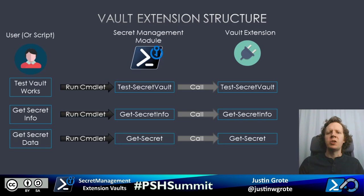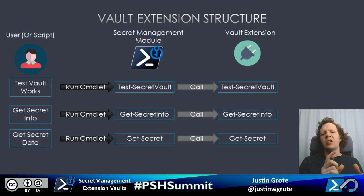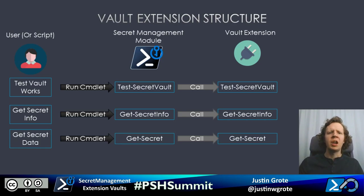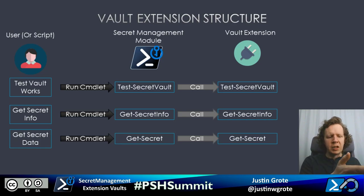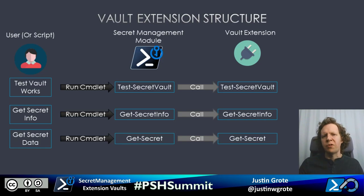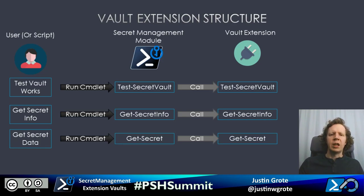There are additional parameters added to your extensions that are different from what the user sees, just to help the secret management module call your commands. The module handles pipelining, separating things out, and picking which vault to use if the user has defined a default vault. You just have to take the secret information that secret management gives you and process it.